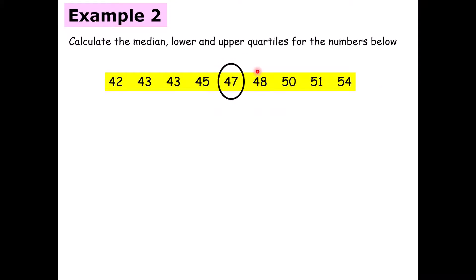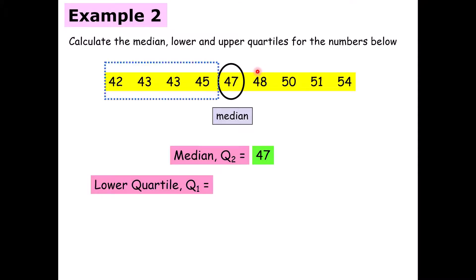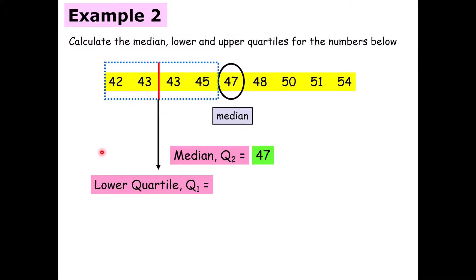Our middle number is going to be our median. So 47 — quartile 2 — is our median. Then we work with the lower set of numbers to find quartile 1. We only have four numbers there, so the middle value falls between the two middle numbers. They both happen to be 43, which works out nicely, so our Q1 is 43.